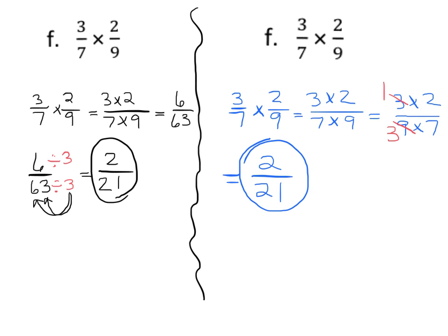So you can see that they both give us the exact same answer. The difference is: here we multiplied first, then we simplified. Here we waited to multiply until first we simplified, then we multiplied. So the idea is you're going to have to multiply and simplify — you get to choose which you do first. Do you want to multiply first, or do you want to simplify first?